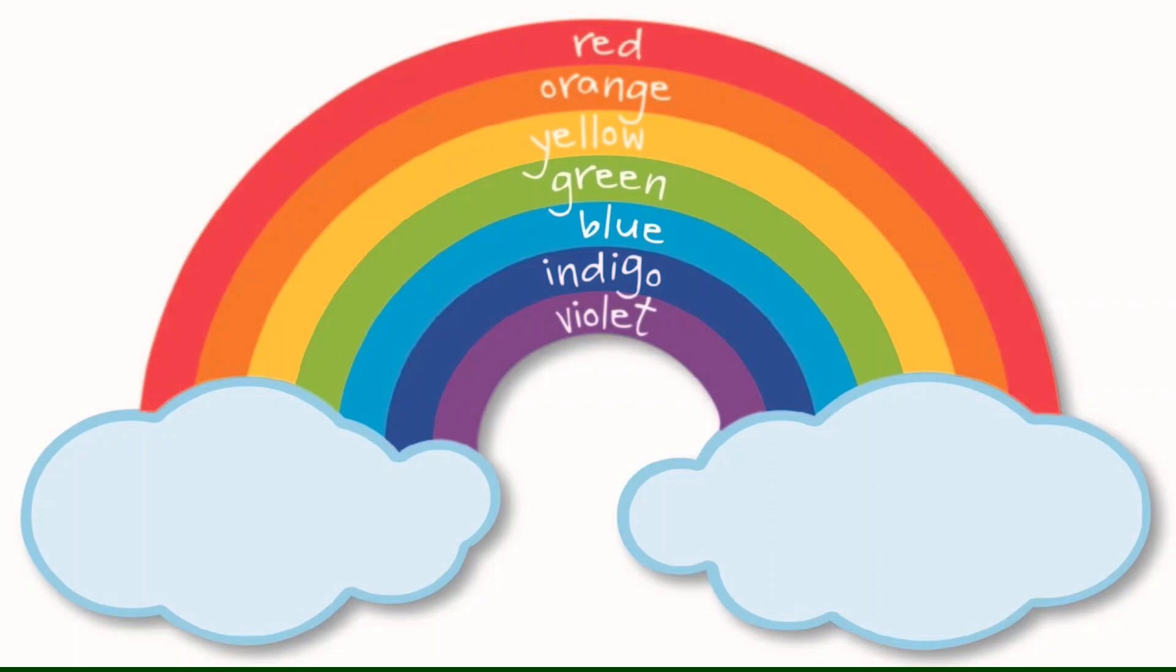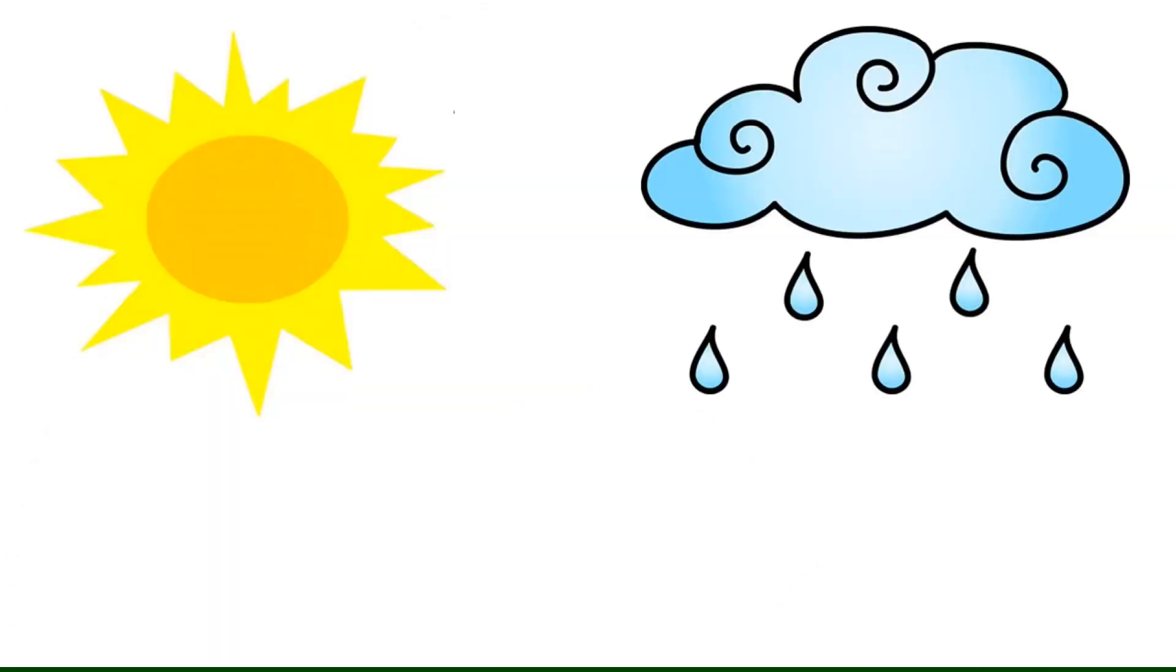Now, how do we see a rainbow? You need sunlight and you need raindrops.